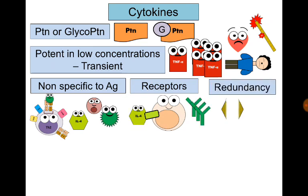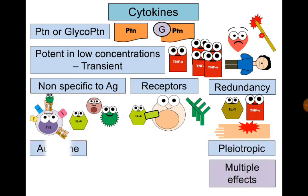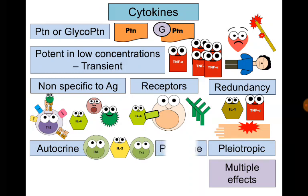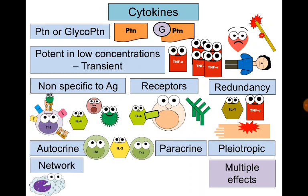Many cytokines can do the same function, and this is called redundancy. Every cytokine can do multiple functions, and this is called pleiotropism. A cytokine can act in an autocrine manner, working on the same cell that produced it, or in a paracrine manner, working on the neighboring cell. Cytokines also can collaborate to act as a network.